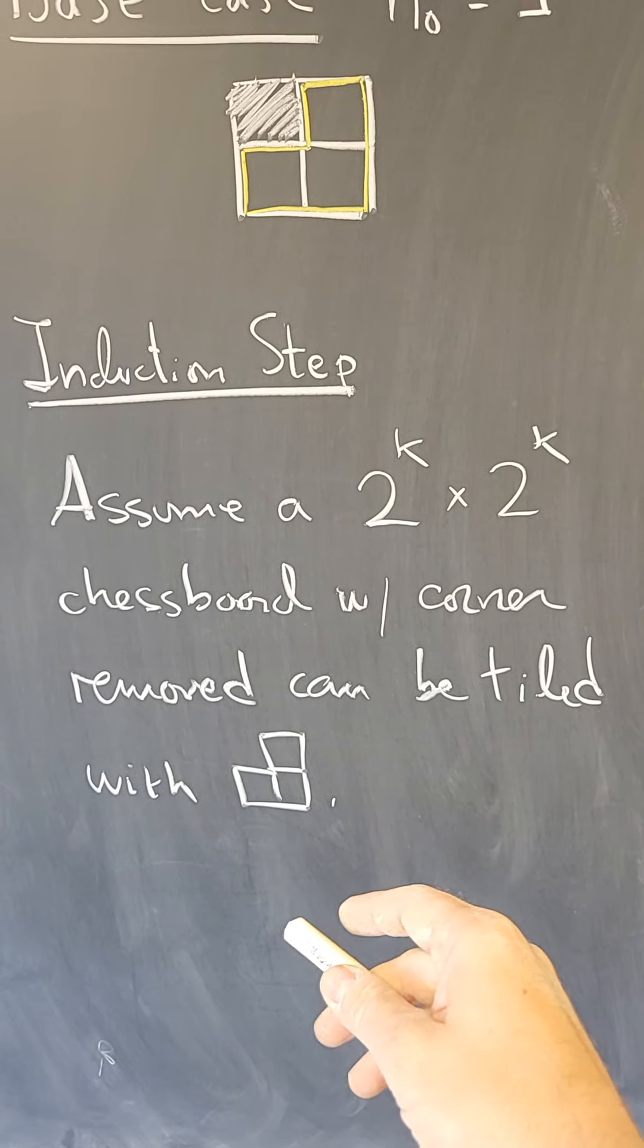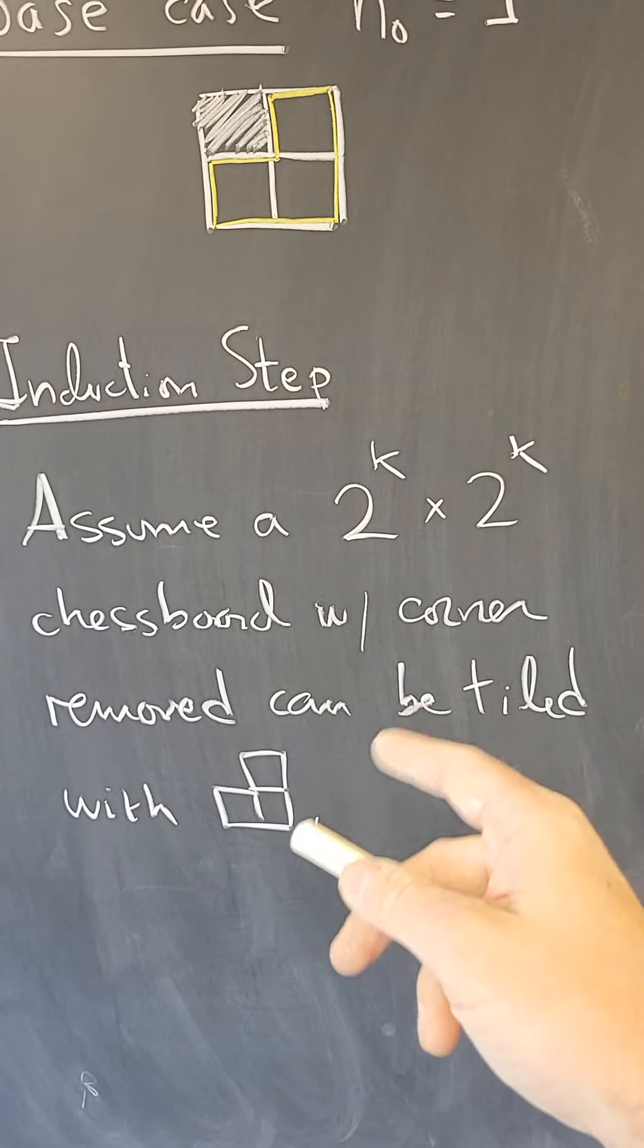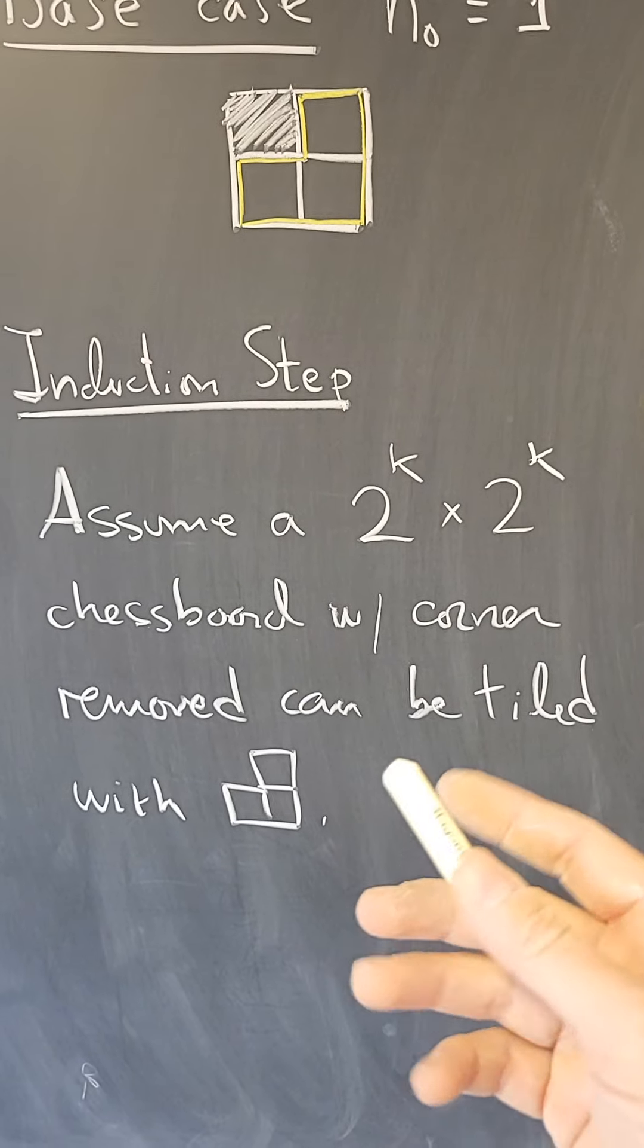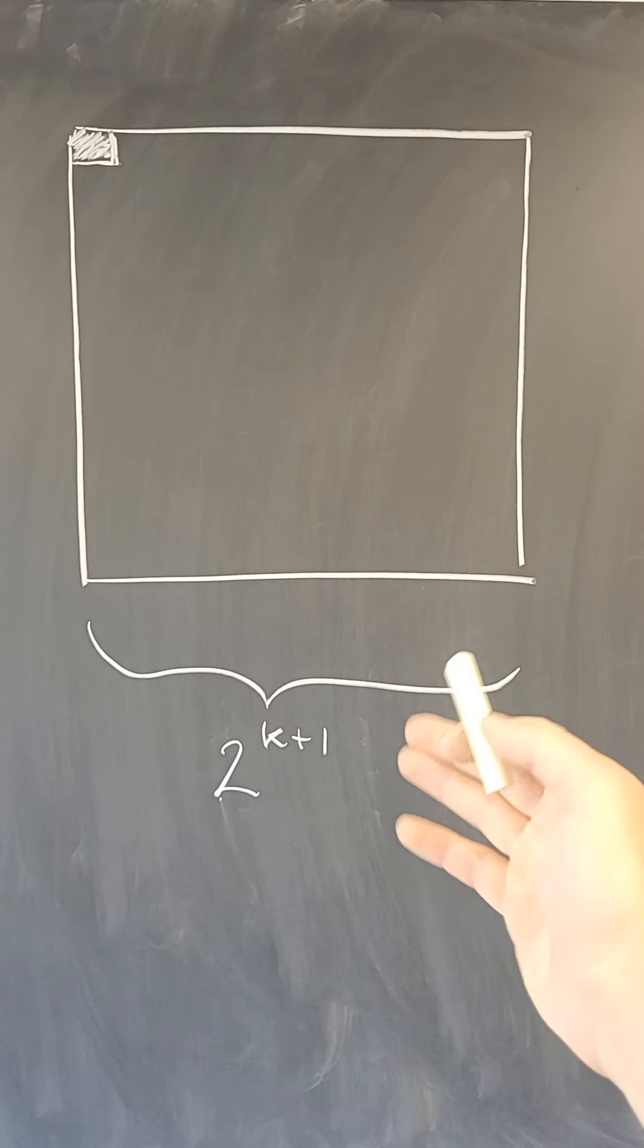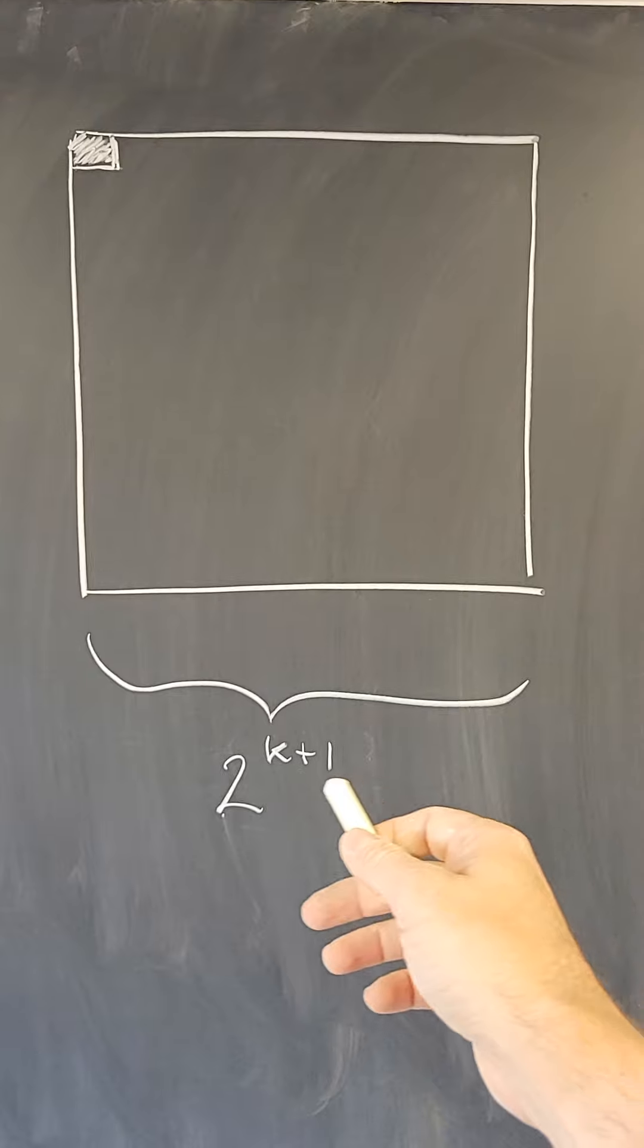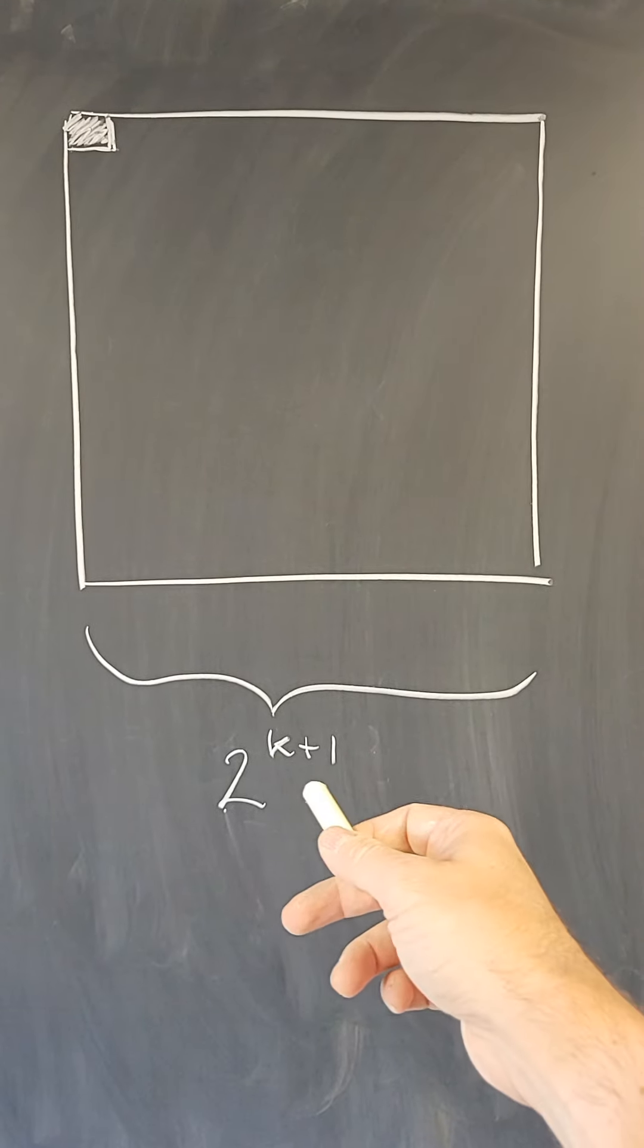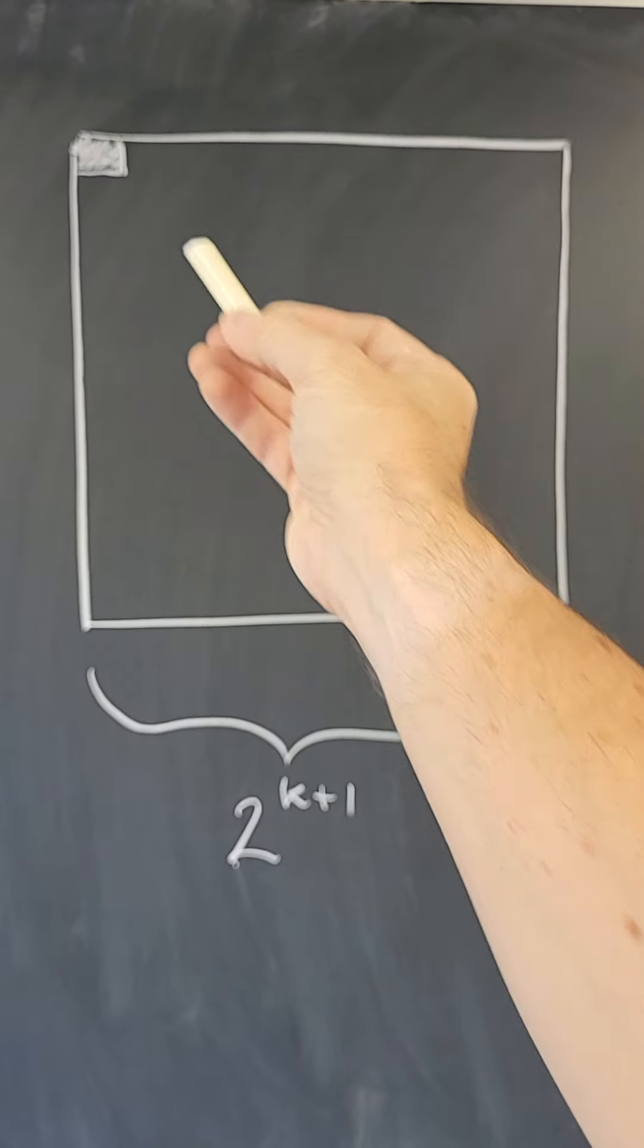And now consider a chessboard that is 2 to the k plus one by 2 to the k plus one with one corner removed. And let's tile that one. So suppose we have a chessboard that is the side length 2 to the k plus one, and one corner is removed.